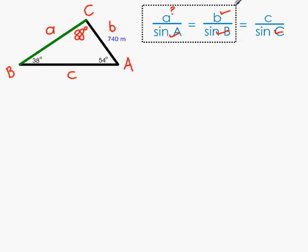So the next thing we are going to do is substitute in our values that we know into our two fractions. So first of all, on top of the first fraction we still have a. That's the one we are trying to find. We know angle A was 54 degrees, so sin A is going to be sin 54. And we know that that is equal to b over sin B. So b is 740, divided by sin B, and angle B is 38. So that's sin 38.